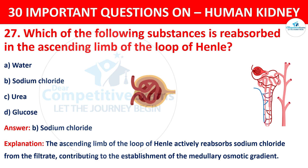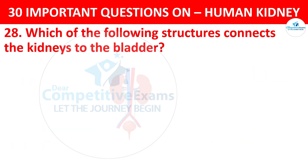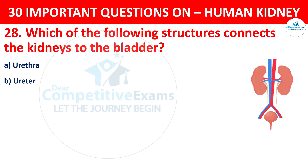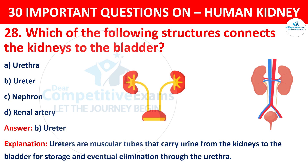Question number 28. Which of the following structures connects the kidneys to the bladder? The options are ureter, urethra, nephron, or renal artery. The correct answer is B, that is ureter. Ureters are muscular tubes that carry urine from the kidneys to the bladder for storage and eventual elimination through the urethra.